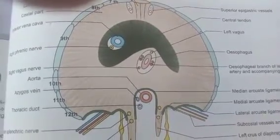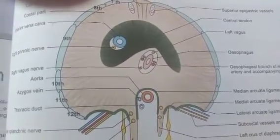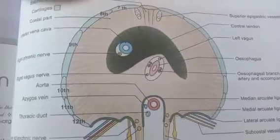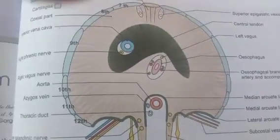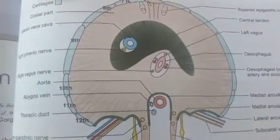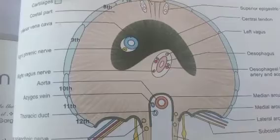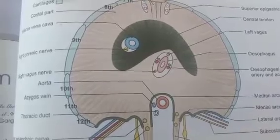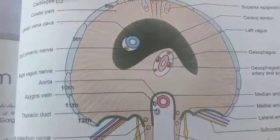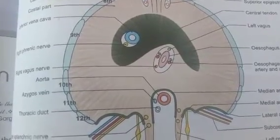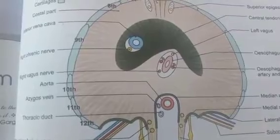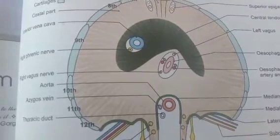The important applied or clinical anatomy of the diaphragm includes hiccups, referred shoulder tip pain, paralysis of the diaphragm, eventration of the diaphragm, and diaphragmatic hernia.